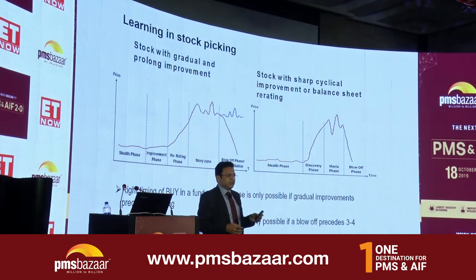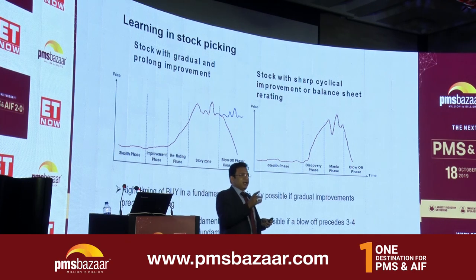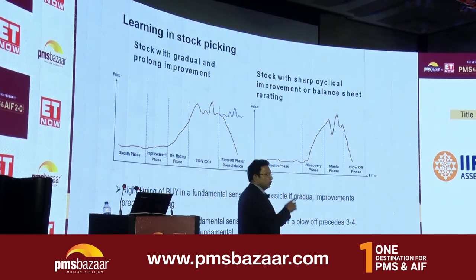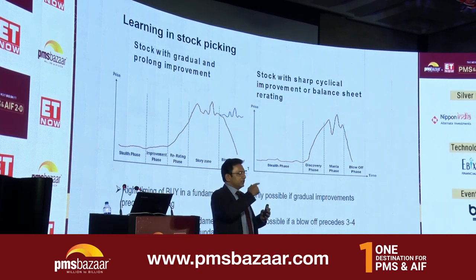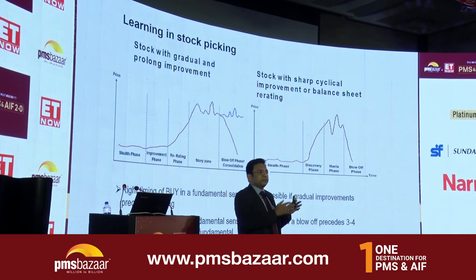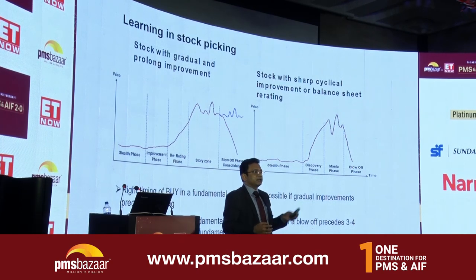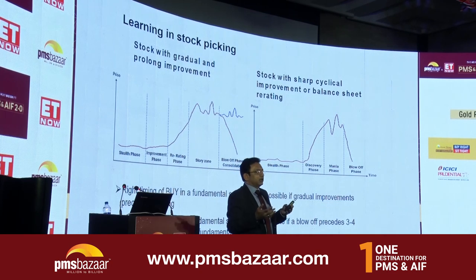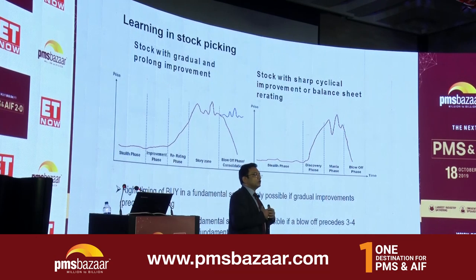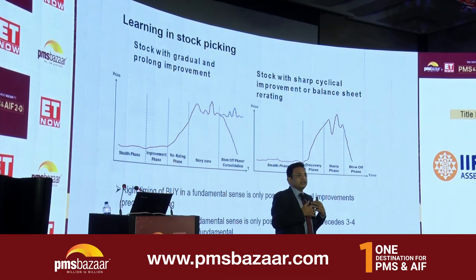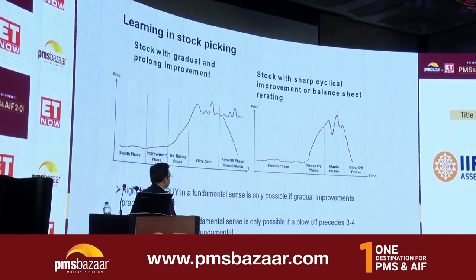But look at the other scenario: a lot of stocks in the 2016-17 cycle had margins that just doubled in one quarter — fundamentals improved not gradually but in a discrete, lumpy fashion. When improvement is lumpy, deterioration also happens very fast. You don't get the smooth two to three quarters to study and become convinced before buying. If something improves very sharply, it will also deteriorate very sharply. So for those of us who are not sure about our market timing skills, the safety is buying only those companies where improvement happens slowly and gradually — because then deterioration will also happen slowly and gradually, giving you time to exit. That's the third lesson from the last cycle.